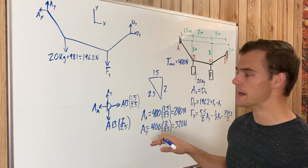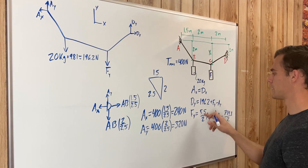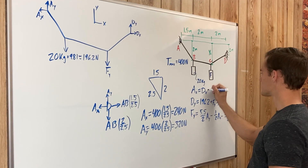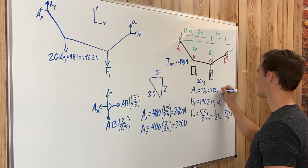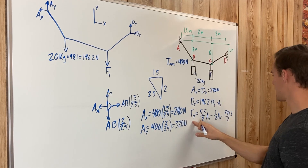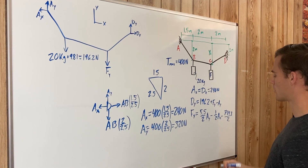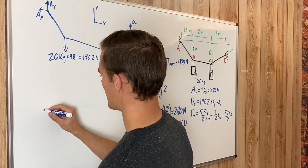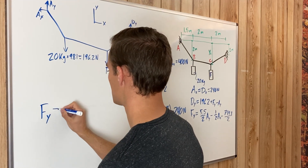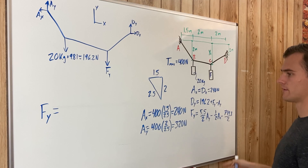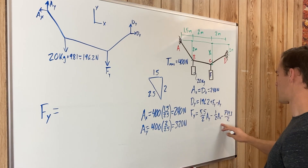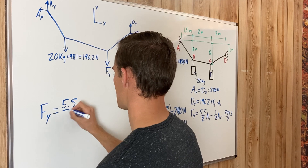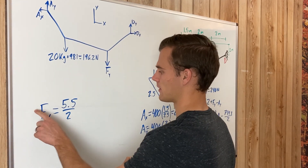Now we know the reaction forces at A. Since A sub x equals D sub x, we also know D sub x equals 240 newtons. F sub y only depends on A sub y and A sub x through the moment equation, so we can now solve for F sub y. We have F sub y equals (5.5/2) times A sub y, where the factor of 2 comes from F sub y being 2 meters from D.